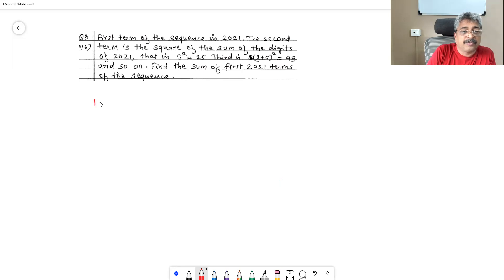First term of the sequence is 2021. Second term is the square of sum of the digits of 2021. So second term, sum of the digits of 2021 is 5 and therefore second term is 25. Third term is sum of the digits of 25 squared. Third term is 49 and so on.